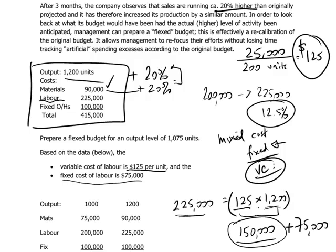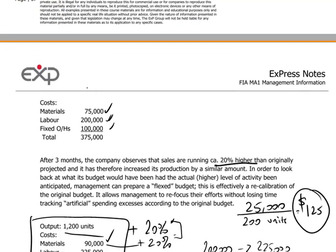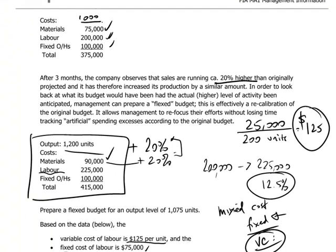One can verify that this is correct by looking at the output level of 1,000 units, where we had labor costs totaling $200,000. Let's break this up and test our conclusions: $200,000 of labor is broken down into variable costs of $125 per unit times 1,000 units, plus fixed labor costs of $75,000. Multiply that through, and yes — it adds up to $200,000. So it is in fact correct.